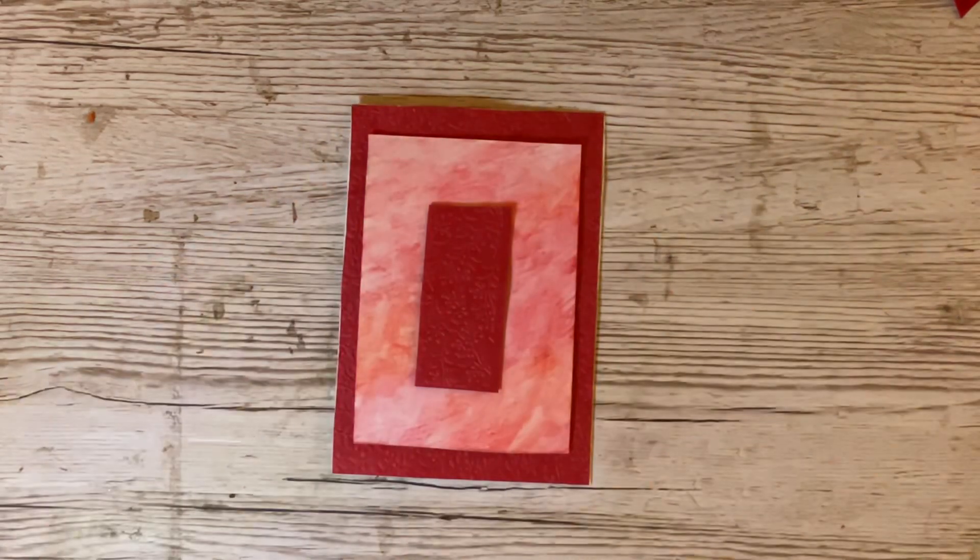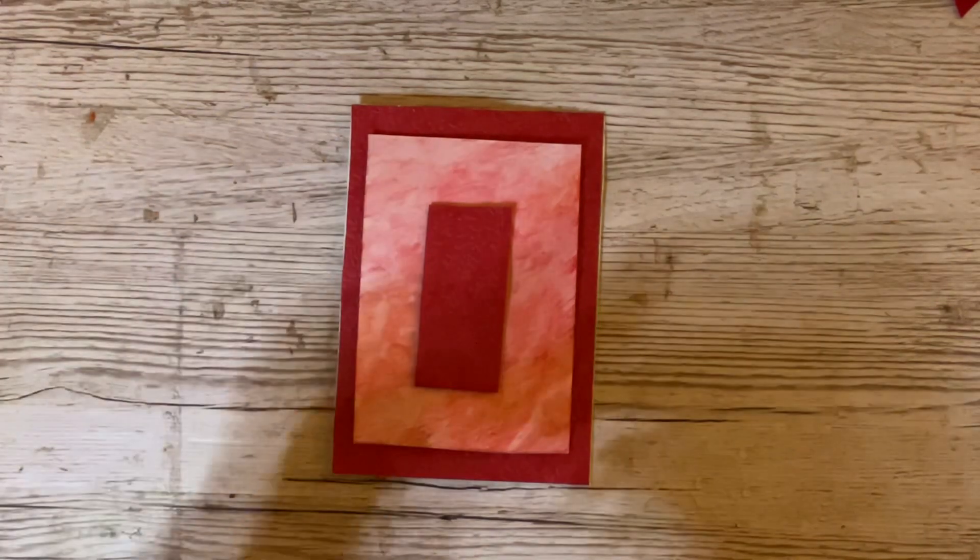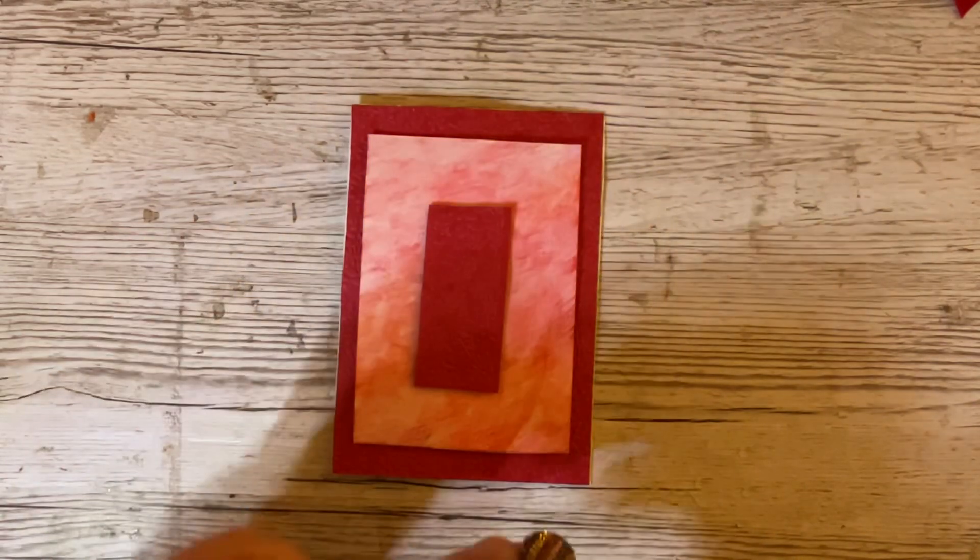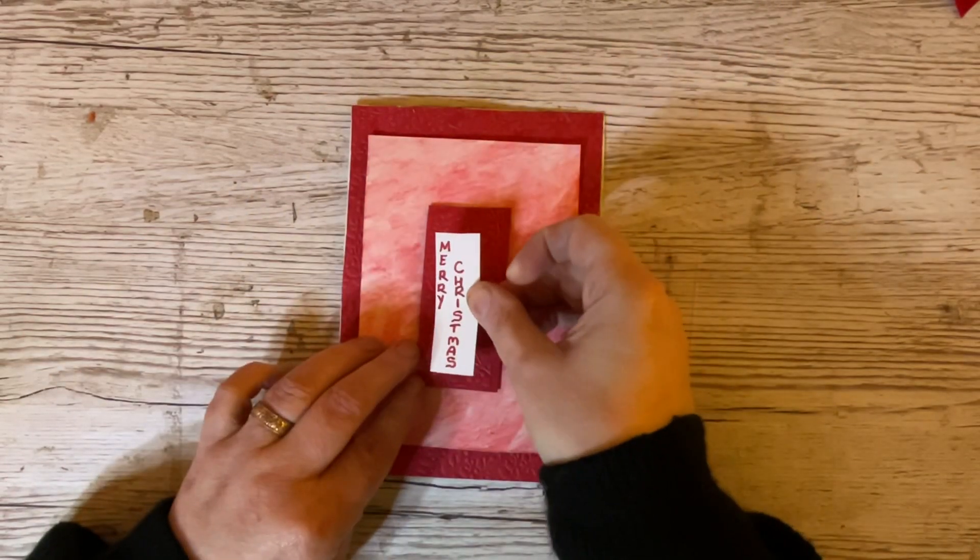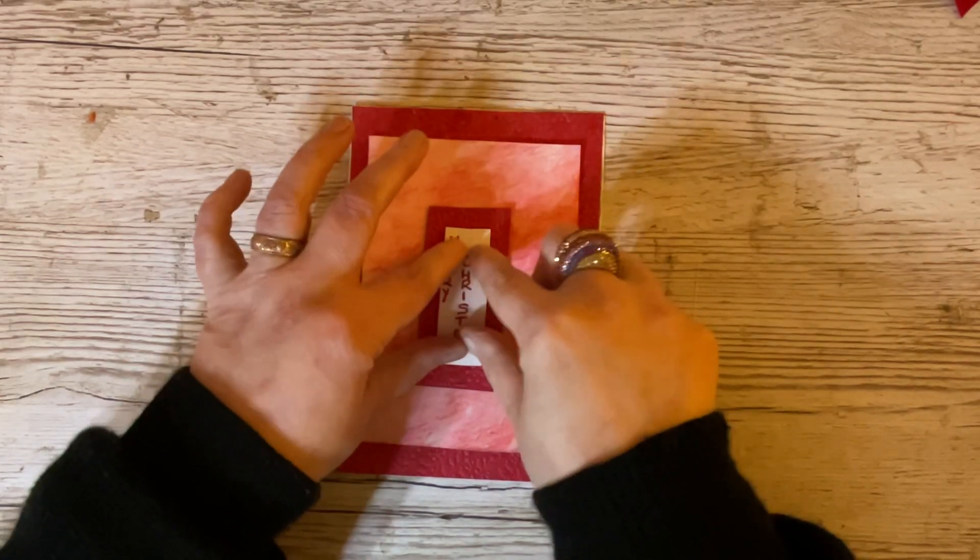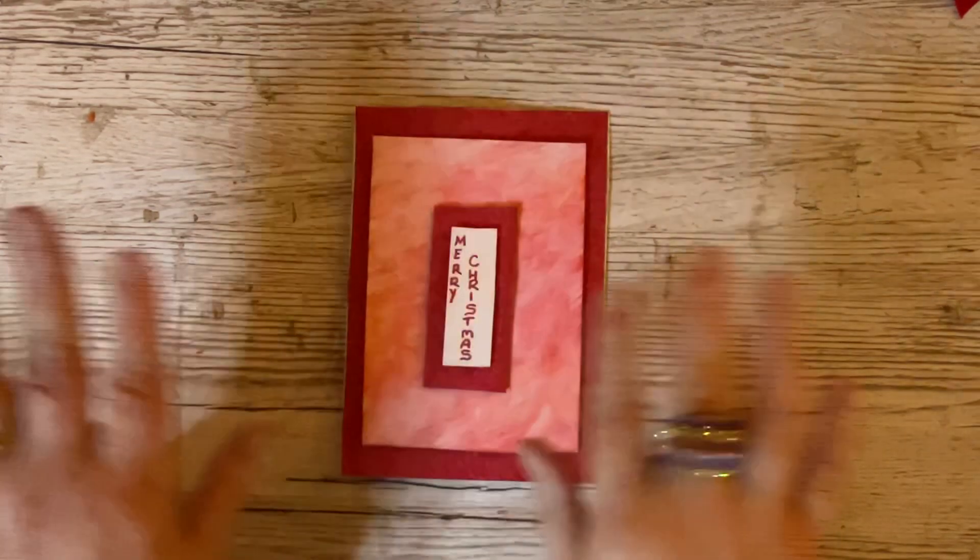I have one more mat for you, which is the sentiment mat. That measures one by two and a half. I'm not going to worry about it. This has got foam pads on it rather than foam tape. I'm not going to worry about putting glue on it this time. I'm just going to pop that right in the middle, like that. We're not going to do any fuss today. There's not going to be any fancy stuff.